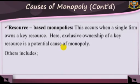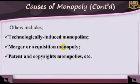3. Resource-based monopolies. These are caused when a single firm owns a key resource. Exclusive ownership of a key resource is a potential cause of monopoly. 4. Technologically induced monopolies. This occurs when a firm enjoys extensive technological economies of scale such that the entry of a new firm is virtually not feasible or possible.